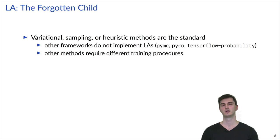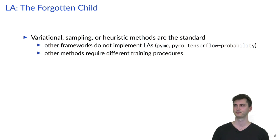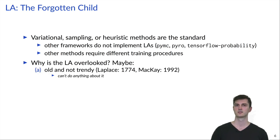Despite being so simple, usually in Bayesian deep learning other methods are used. For example, variational methods, sampling methods or some heuristics. And in most common frameworks for deep learning, the Laplace approximation is not even implemented. Also, other methods typically require different training procedures.